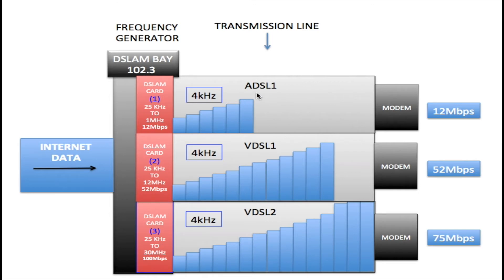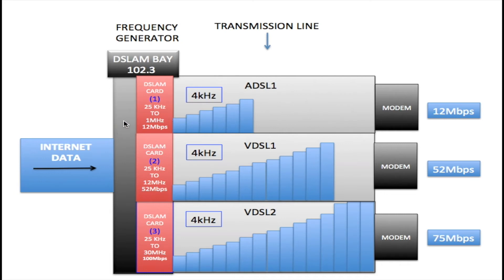I'm going to start with the ADSL1 type line to explain the relationship between frequency, bandwidth, and speed. On an ADSL1 type line we have frequencies going from 25 kilohertz to 1 megahertz, and these frequencies are sent out onto the line to the customer. If all of these frequencies get through, you'll have a speed of 12 megabits per second. Where bandwidth comes into play is on the line — we need bandwidth in order to send our data from the DSLAM card to the modem.